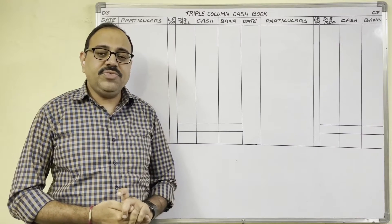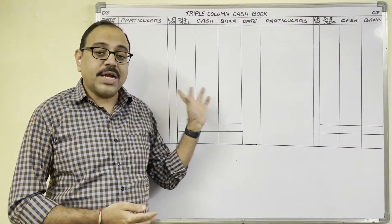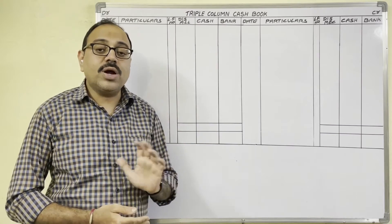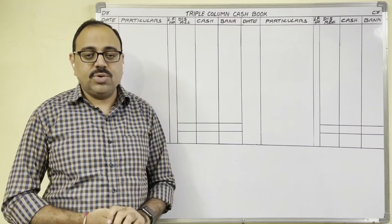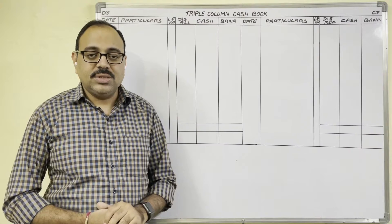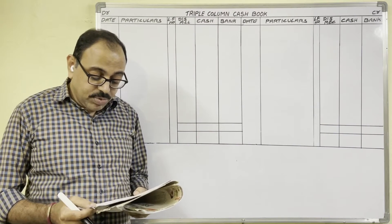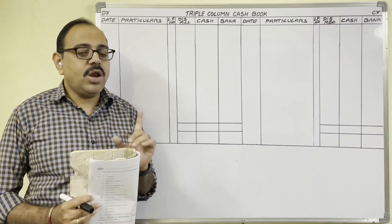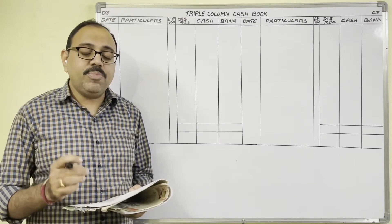Hello students. In this video I'm going to explain the 14th problem from the triple column cash book topic. I'm taking this question from the Inter First Year Telangana State Teru Academy textbook, but this video is helpful to all students who want to know about the cash book topic. The question asks us to record the following transactions in a cash book with cash, bank, and discount columns — that is, a triple column cash book.